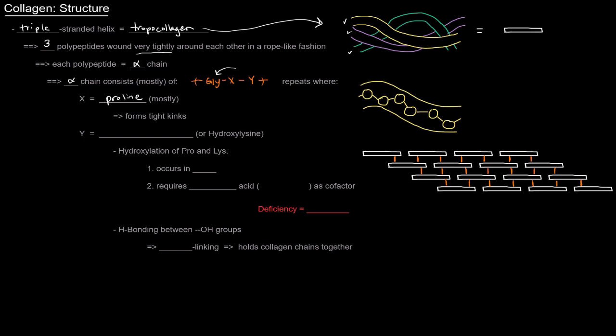And so here, when that proline is right next to glycine, it allows tight kinks to form because glycine doesn't sterically hinder it. So that's pretty important. It allows the triple-stranded helix to wind really, really tightly around each other. Those three polypeptides.